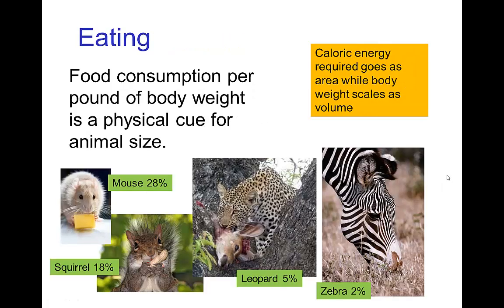This is also related to the fact that food consumption per pound of body weight scales with animal size. Something small like a mouse has to eat 28 percent of its body weight daily, while something like a zebra only has to eat about 2 percent. This is because the caloric energy required is proportional to area, but body weight goes as volume — so relative to their size, small animals are voracious eaters.